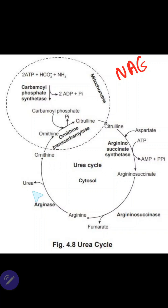The normal level of urea in the blood is 15 to 45 milligrams per deciliter. Regarding the energetics of the urea cycle, a total of 4 ATPs are utilized. The fumarate synthesized enters the TCA cycle and yields 2.5 molecules of ATP, so the net utilization of ATP is 1.5 molecules. Oxaloacetate in the TCA cycle undergoes transamination to produce aspartate, which is utilized in the urea cycle.